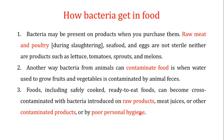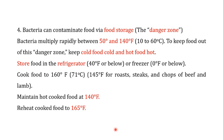I also explained how bacteria get into our food. The bacteria may be present on products when you purchase them — they may be present on raw products, contaminated by animal feces, or contaminated by poor personal hygiene of the person handling the food. I also discussed the danger zone: bacteria best multiply between 50 and 140 degrees Fahrenheit, that is between 10 and 60 degrees Celsius, so you must keep food below 10°C or above 60°C to stop bacterial multiplication.